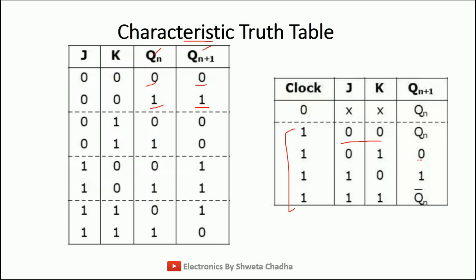Next is J=0, K=1 — you can see the output is 0 in all those cases. The third condition is when J is 1, K is 0 — output is 1. Both outputs are 1 when J is 1 and K is 0. And the last one is J=1, K=1, which is known as toggle. If the previous output was 0, next will be 1. And if the previous output was 1, next will become 0. This is known as the toggle condition.